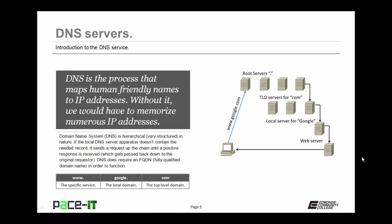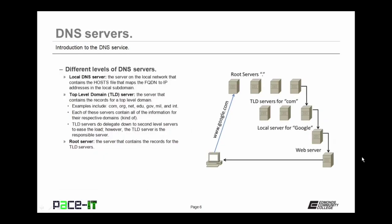An FQDN is something like www.google.com. The 'www' is the specific service being requested, 'Google' is the local domain that contains that specific service, and 'com' is the top level that contains the Google domain. That is an FQDN. There can be a local DNS server — the server on the local network that contains the hosts file mapping all FQDNs to their specific IP addresses in the local subdomain. It may or may not be present.